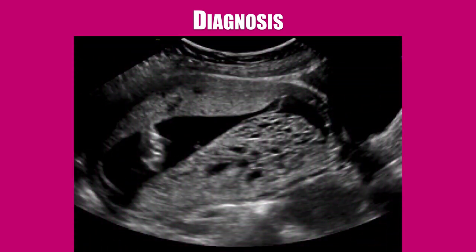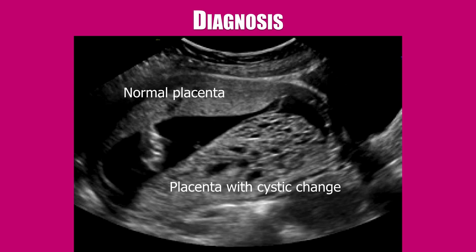This is a transvaginal scan showing two placentas. The anterior placenta is normal whereas the posterior placenta shows cystic changes suggestive of a vesicular mold. This suggests an early diagnosis of a twin pregnancy where one fetus is normal and the other one is vesicular mold.